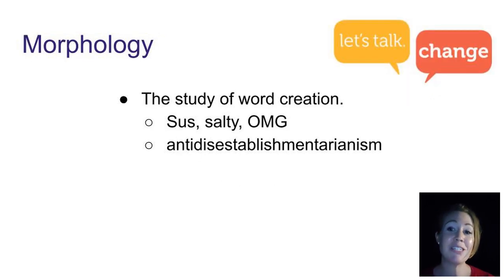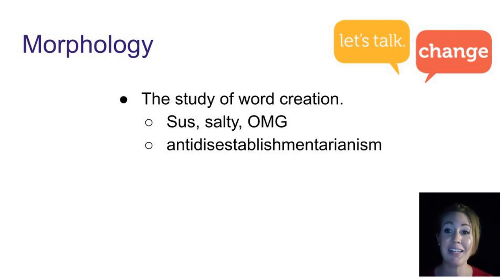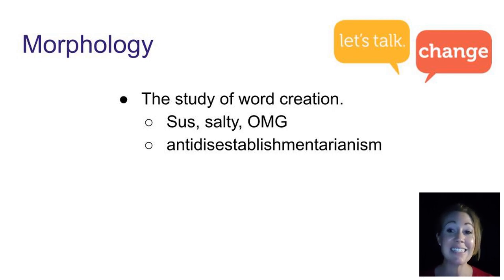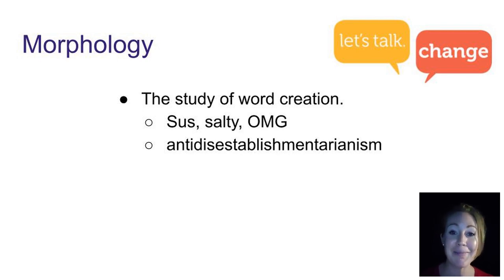In morphology, we study how words are made. So where do we get slang words like 'sus,' 'salty,' and 'omg'? How are new words created and added to the English language? And what process allows for the word 'establish' to morph into the word 'anti-disestablishmentarianism'? This is a really fun field that reminds you how fun the words in a language can be.